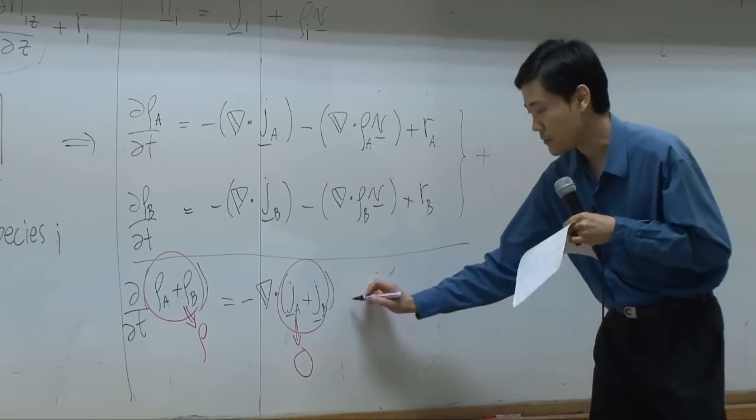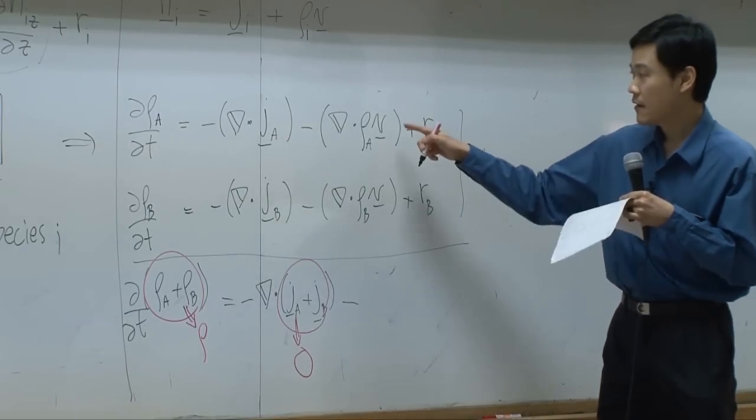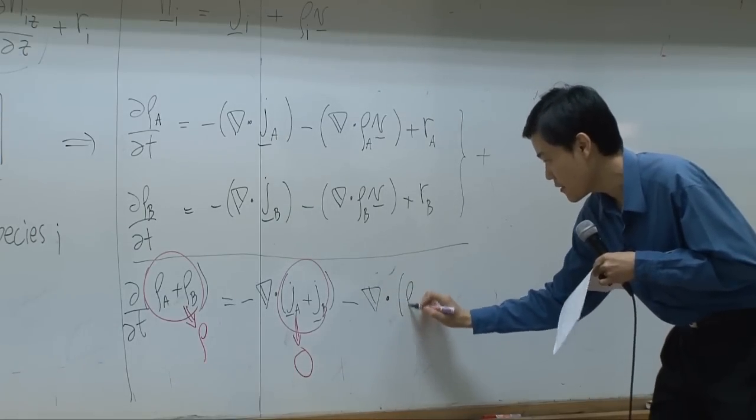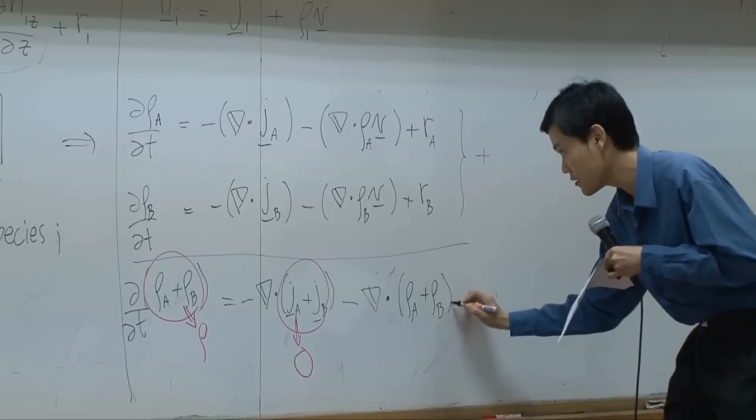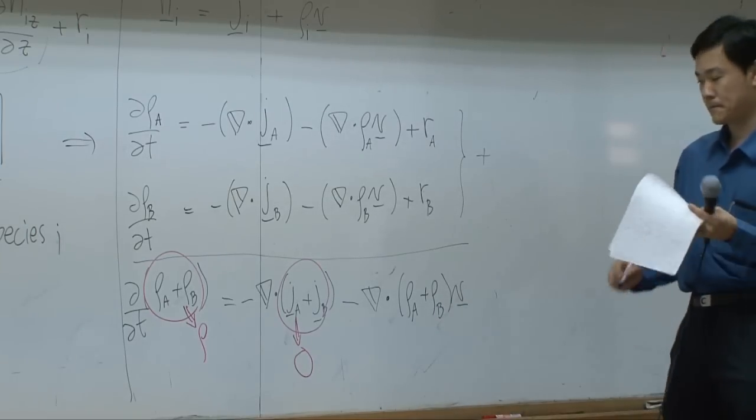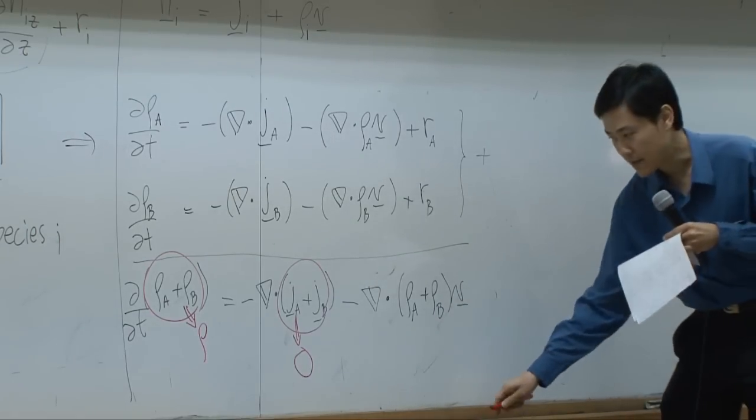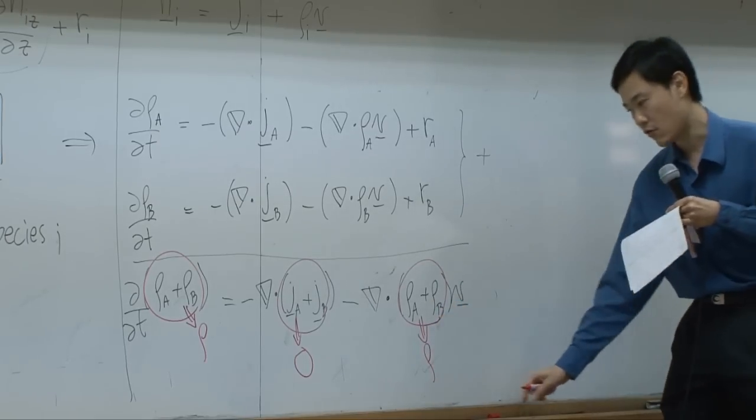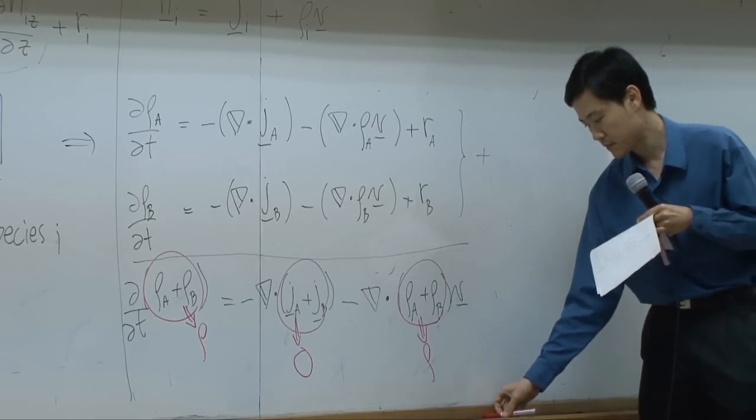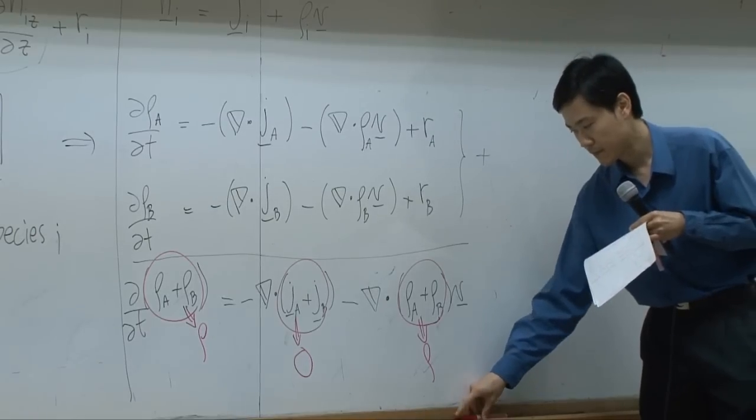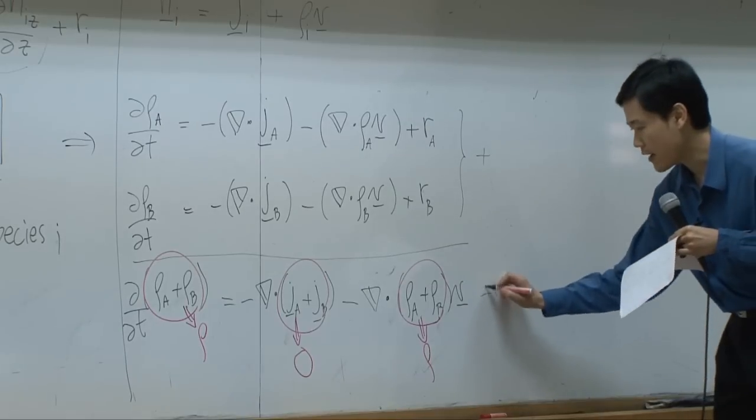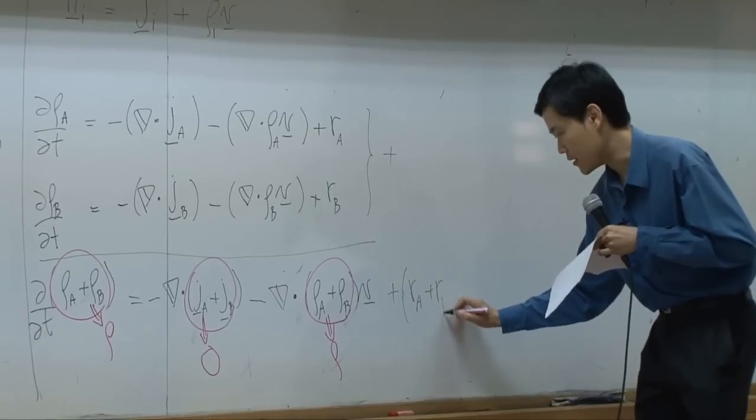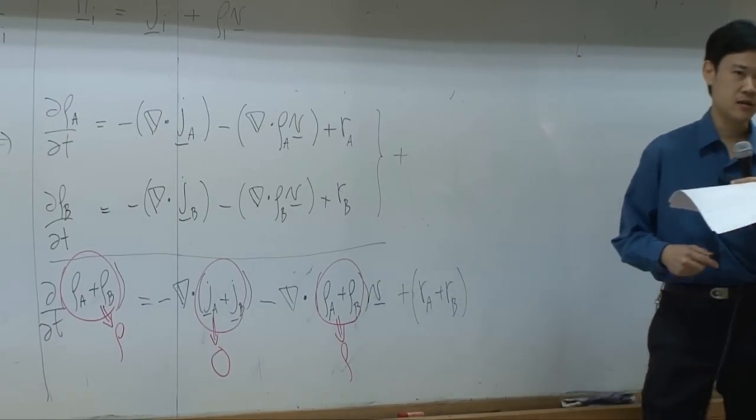Next term: minus delta dot (rho_a + rho_b) times v. Again, rho_a plus rho_b should equal to total concentration rho. Last term, you have plus r_a plus r_b. What is r_a plus r_b?